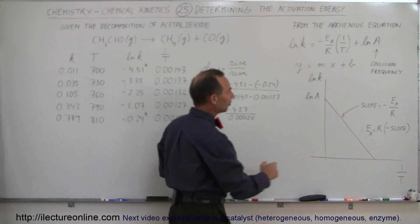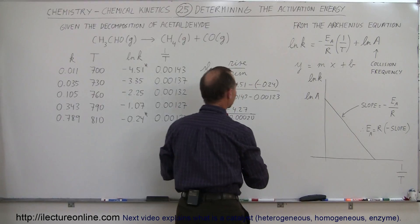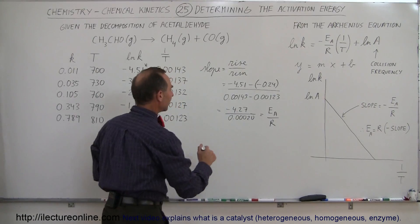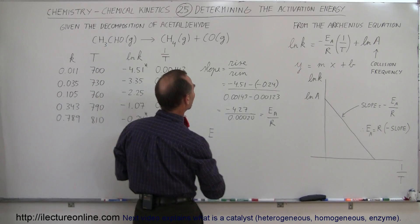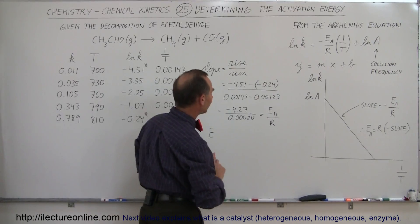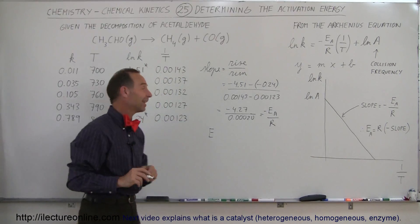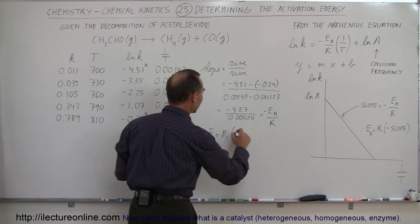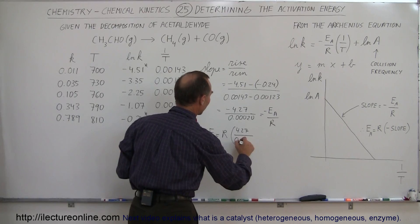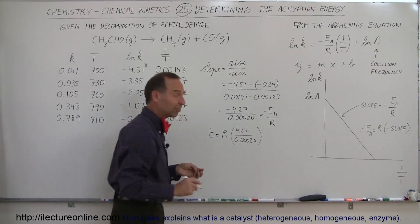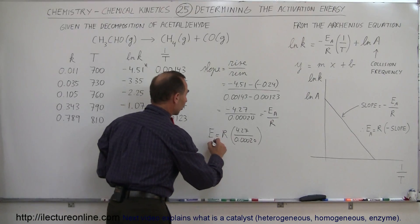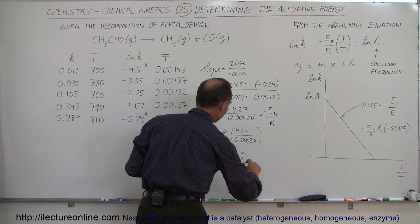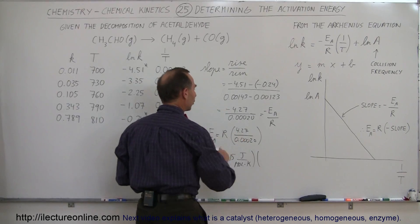Notice that by definition, the slope is equal to the negative of the activation energy divided by the gas constant. So this must be equal to the negative of the activation energy divided by the gas constant. That means the activation energy E — and we can't forget that negative sign — the two negative signs cancel out, and the activation energy is equal to the gas constant times the ratio of 4.27 divided by 0.00020. Since the gas constant is in terms of joules, the activation energy will also be in joules — 8.315 joules per mole·kelvin — times 4.27.